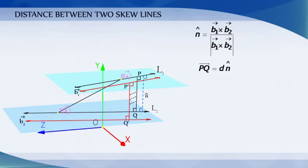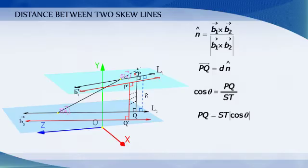Let theta be the angle between the vectors ST and PQ. Then PQ equals ST times cos theta.